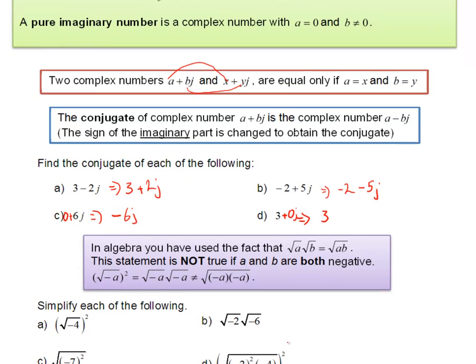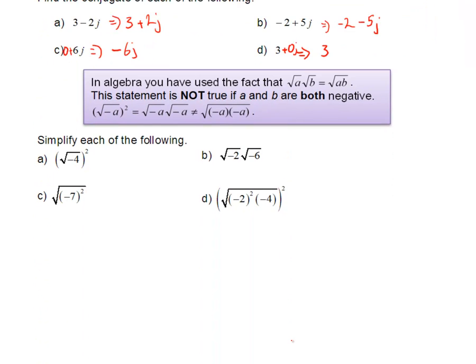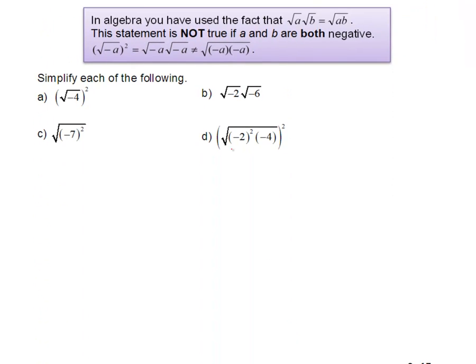The purple box here shows us a very important rule or statement. We've used this extensively in simplifying radicals that the root of a times the root of b is the root of a times b. But that was only true for positive values.